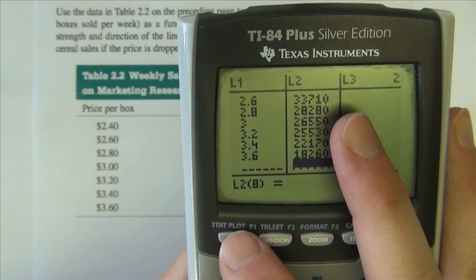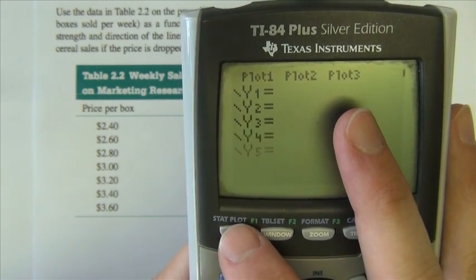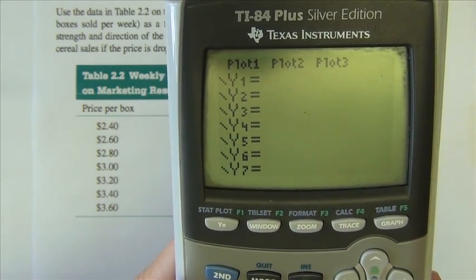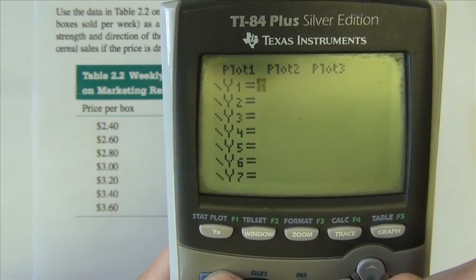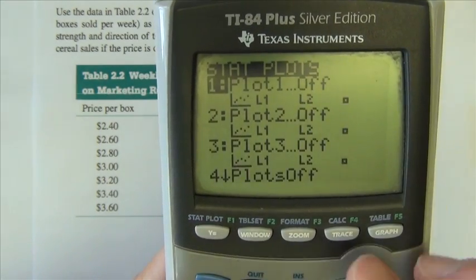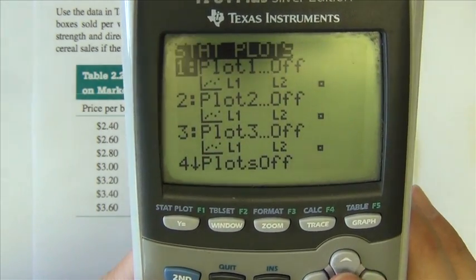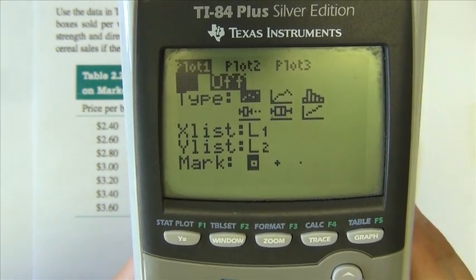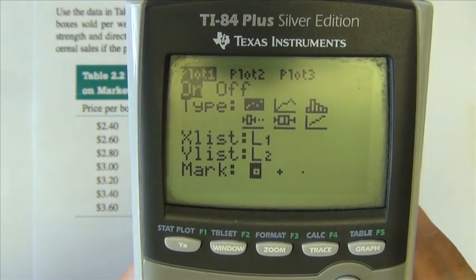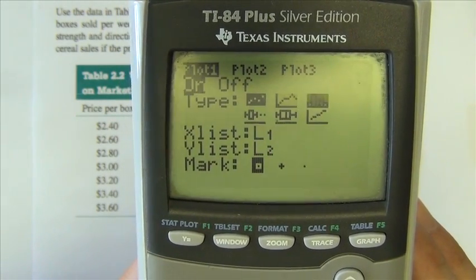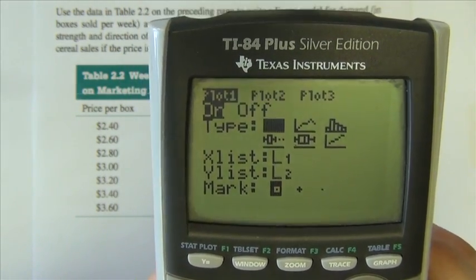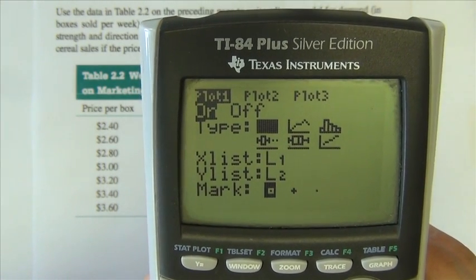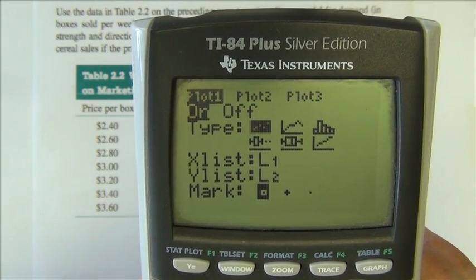Go to the Y equals button right here - it says STAT plot on it. We actually don't want the Y equals, we want the STAT plot above, so hit SECOND Y equals. You probably have all the plots turned off like I do - just hit ENTER on plot 1, and we're going to turn plot 1 on. We can do a variety of different types of graphs. The first one here highlighted is the scatter plot.